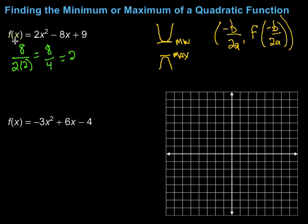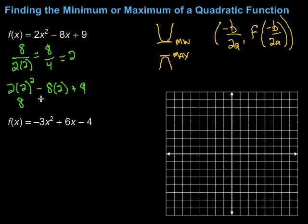Now I need to find the corresponding y-coordinate, so I'm going to put x=2 into the function: 2 times 2 squared minus 8 times 2 plus 9. Order of operations says we do the exponent first — 2 squared is 4, times 2 is 8. Then minus 8 times 2 is minus 16, plus 9. So 8 minus 16 is negative 8, and negative 8 plus 9 is 1. Our vertex for this one is (2, 1).